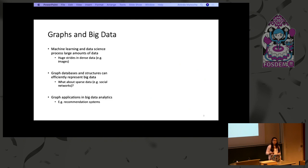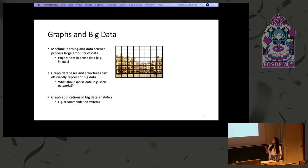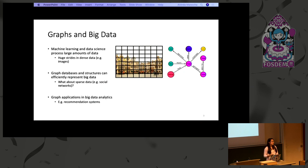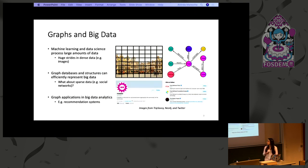Many machine learning and data science applications need to process large amounts of dense data — for example, images composed of many pixels. Fortunately, huge strides have been made in processing these types of data, like neural network accelerators. Meanwhile, graphs can efficiently represent big data, although their data layouts are often sparse, and so they require different computing paradigms. Due to the ubiquity of graph databases and data structures, graph applications are at the heart of many big data analytics — for example, recommendation systems.